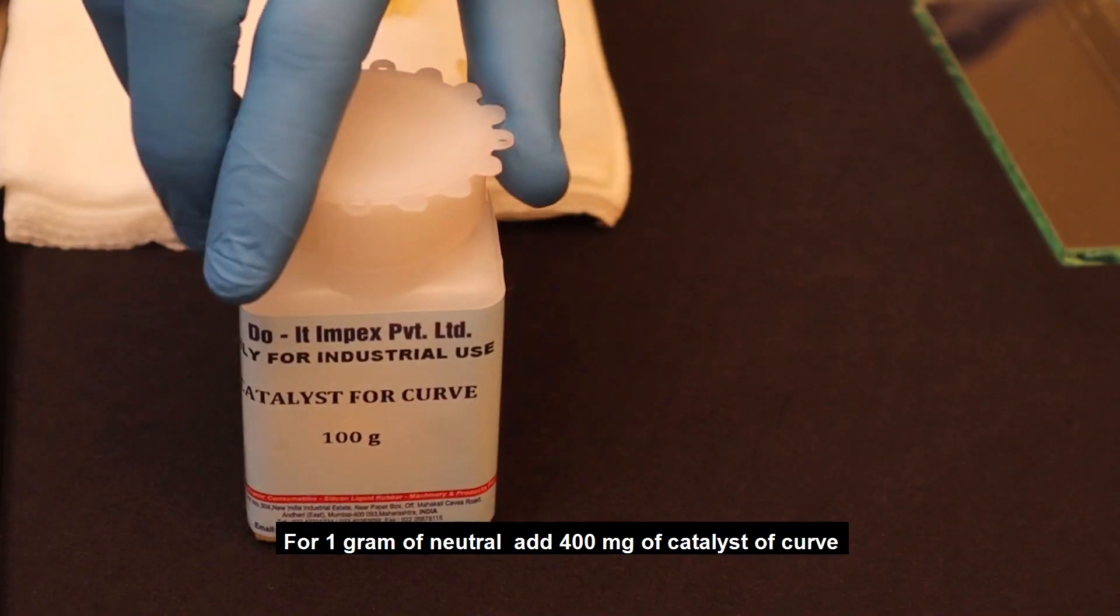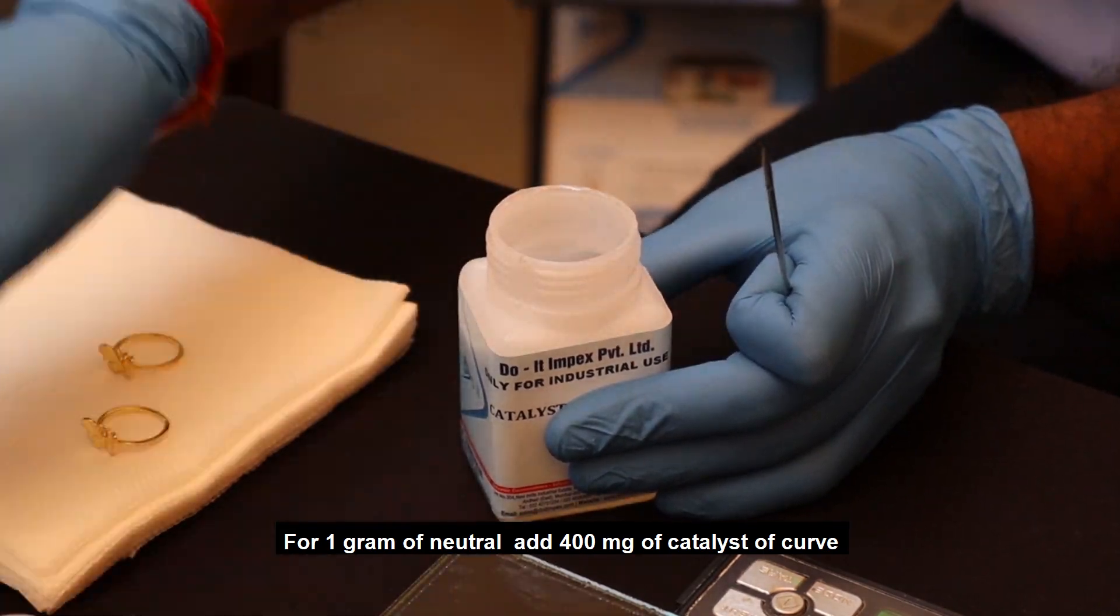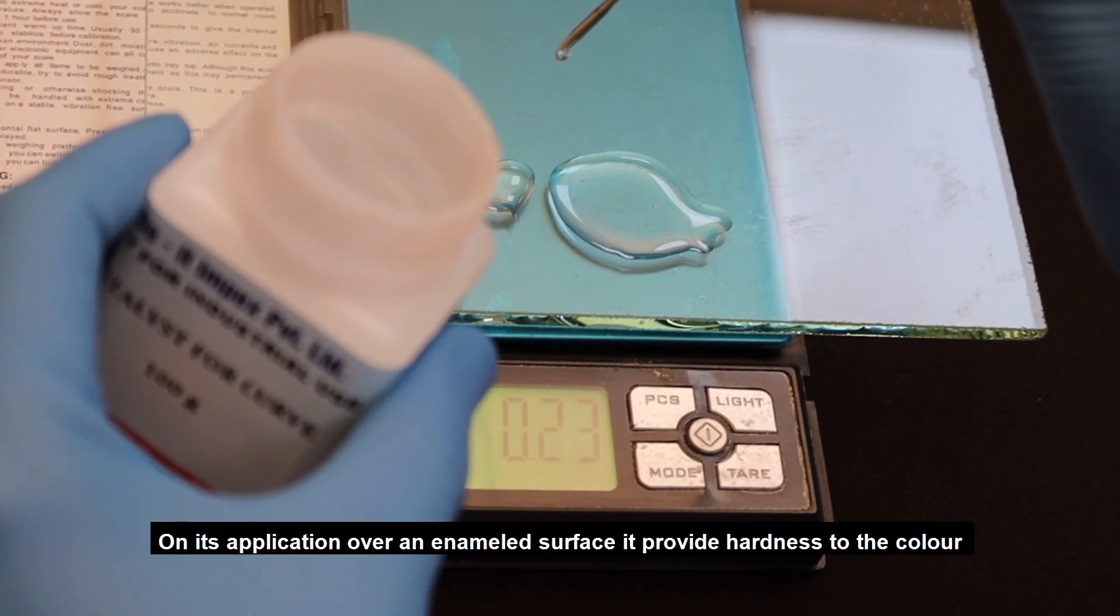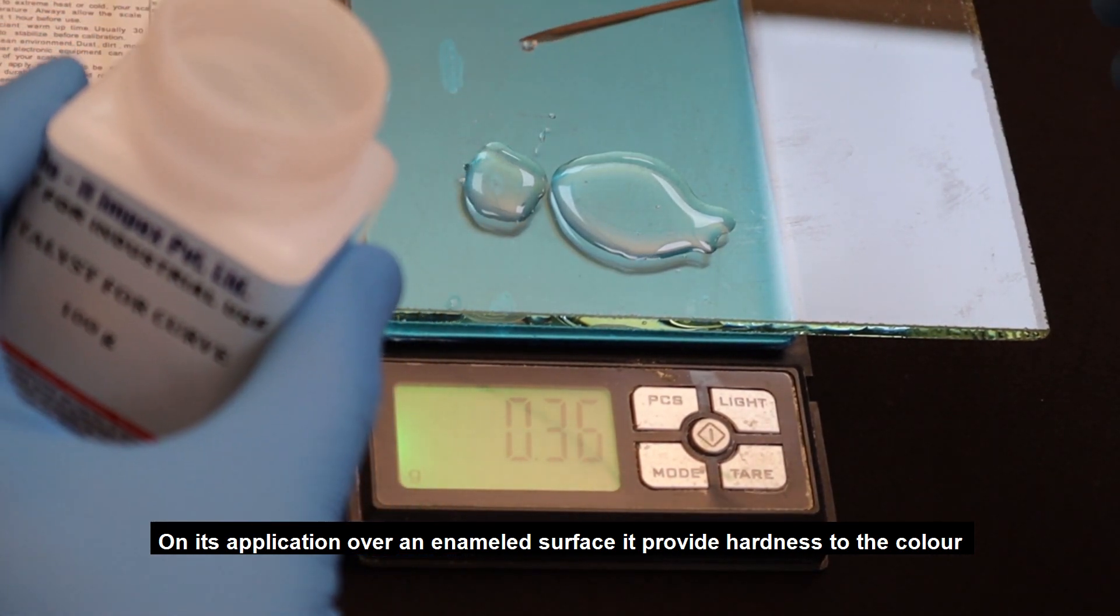For 1 gram of neutral, add 400mg of catalyst. On its application over an enameled surface, it provides hardness to the color.